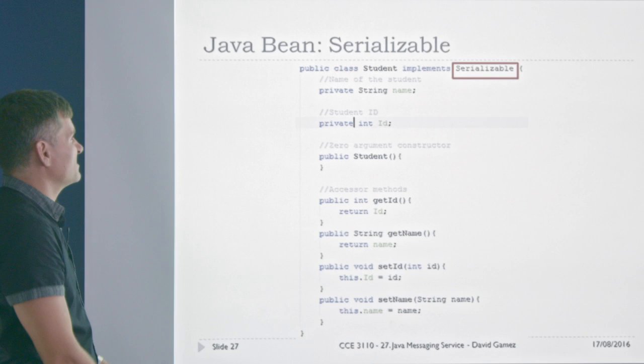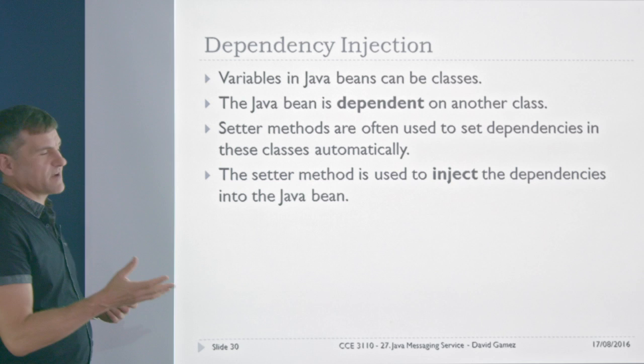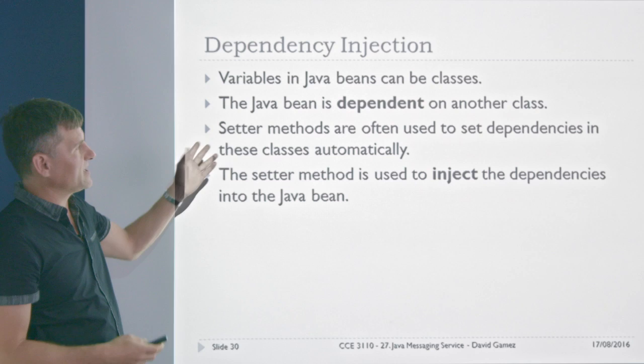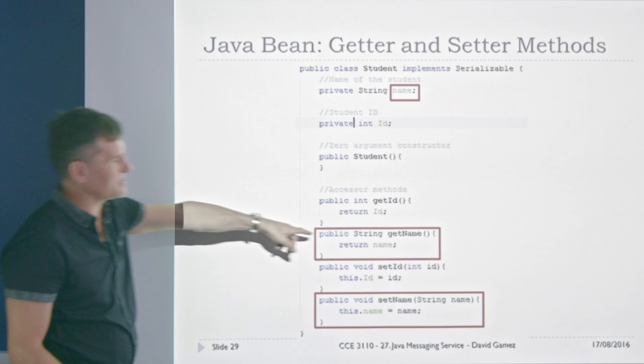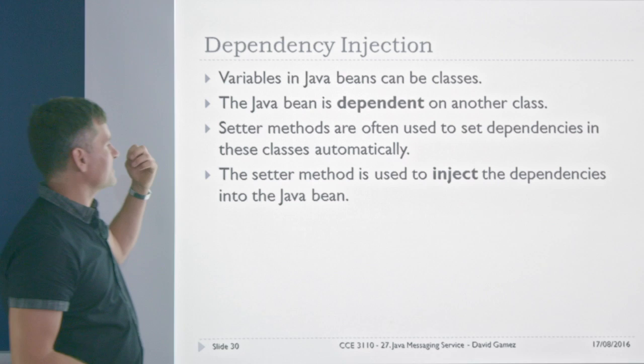The idea behind a Java Bean is that it's a simple, modular Java class where you can set all the variables externally and set the dependencies in. You can also send it over a network or save it to a file — it's a very flexible, modular blob of code. The dependency injection aspect is the key thing here: some of the variables can be classes, and the setter methods are used to inject those dependencies automatically.